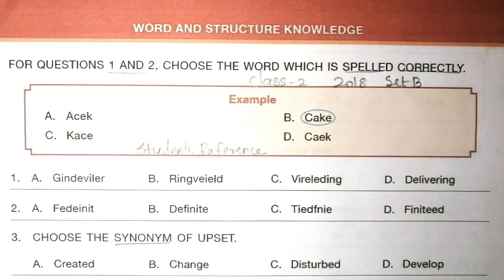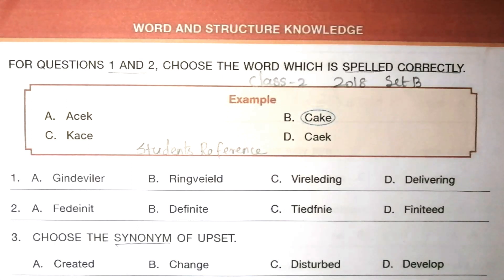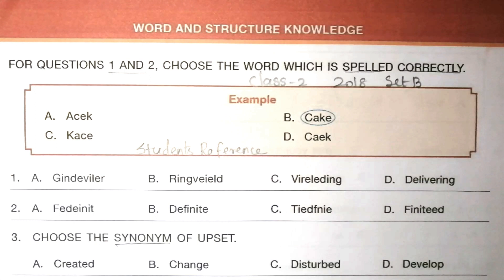Hi, my dear students, welcome to Students Reference. If you are new to this channel, please subscribe and click the bell icon to get notifications for upcoming videos. Today we are going to discuss the 2018 SET B IEO question paper for class 2 students. I have already uploaded some other IEO, NSO, IMO, and IGKO question papers for class 2 students — please go to the playlist in Students Reference and click Olympiad Class 2 to get these question papers.